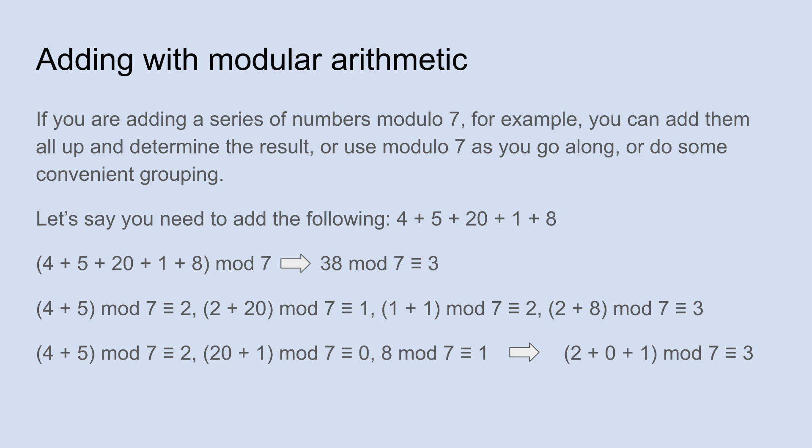So either way you do it, you get 3. The convenience grouping is not always going to work out, because it depends on some numbers just being convenient. So I would try, probably, if you're going to do the algorithm for calculating the day of the week, try to do the running total. That would probably be the easiest one.